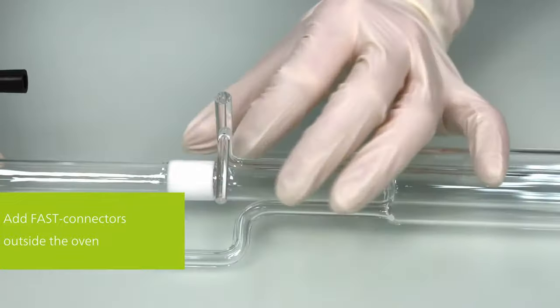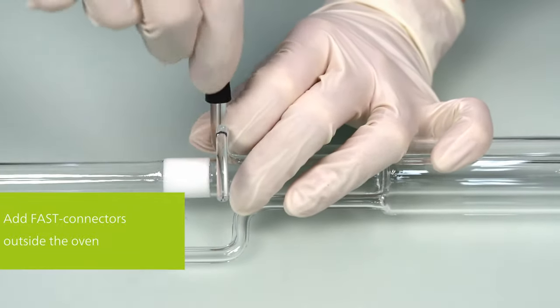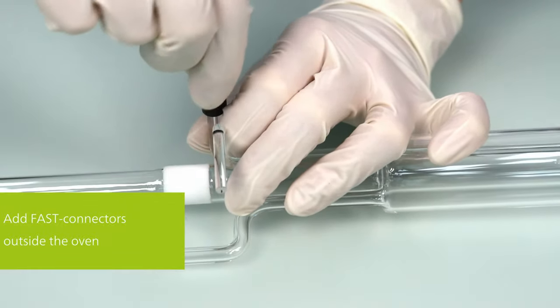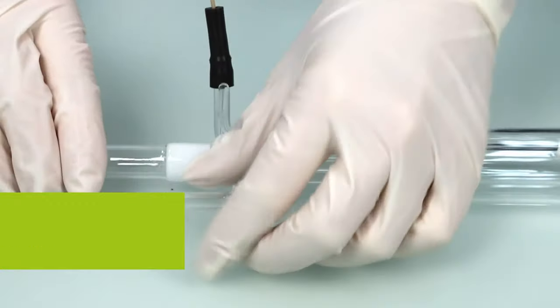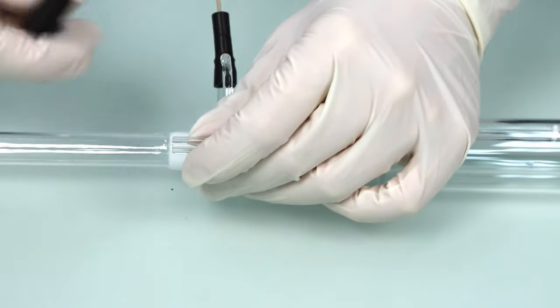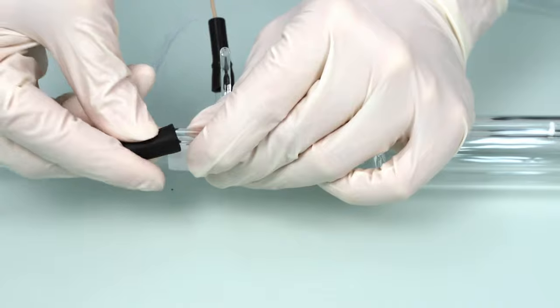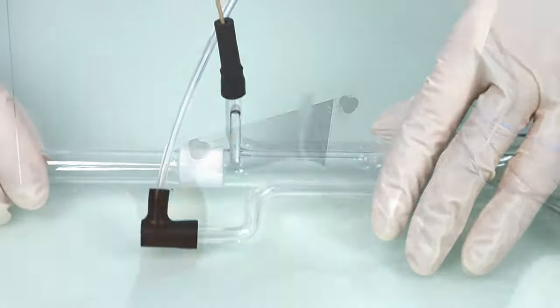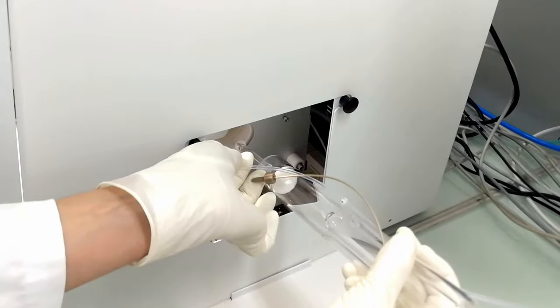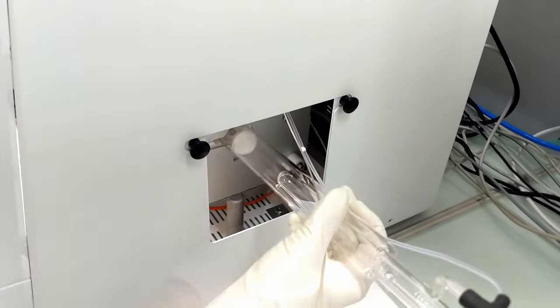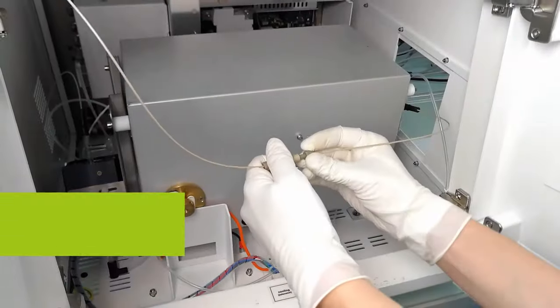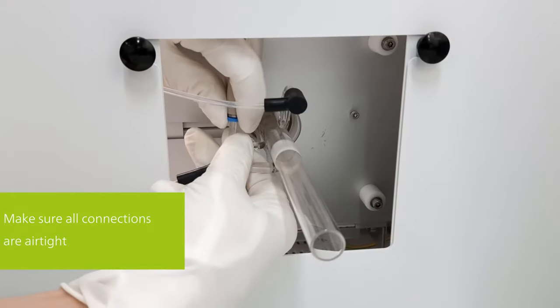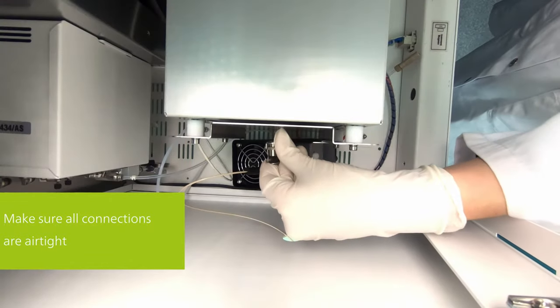In order to avoid breaking the connections of the combustion tube, we recommend adding the fast connectors outside the combustion oven. That way, you only have to connect the coupling after inserting the tube and can again handle the critical connections beforehand. Gently push the prepared combustion tube into the oven compartment. Then reconnect the different couplings. Make sure that all connections are gas-tight.